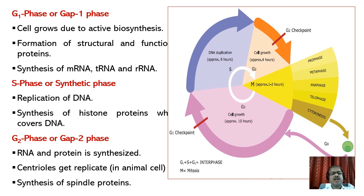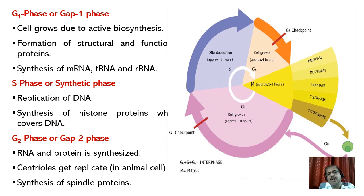Synthesis of mRNA, tRNA, as well as ribosomal RNA occurs during G1. In the S phase (synthetic phase), replication of DNA occurs as well as synthesis of histone proteins, which cover the DNA. In the G2 phase, RNA and proteins are synthesized, and at the same time synthesis of spindle proteins occurs.